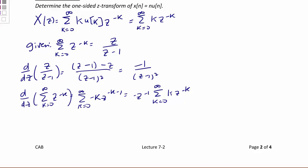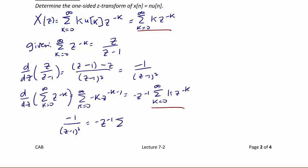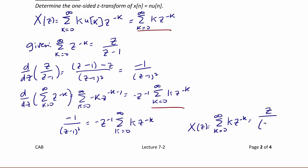What you should notice is that this last expression is equivalent to what we are solving for. Using algebra to equate these expressions: negative 1 over (z minus 1) squared equals negative z to the negative 1 times the summation from k equals 0 to infinity of k times z to the negative k, which equals X of z. Therefore X of z equals z over (z minus 1) squared. The region of convergence is the same as the prior problem: 1 over z less than 1, or |z| greater than 1.